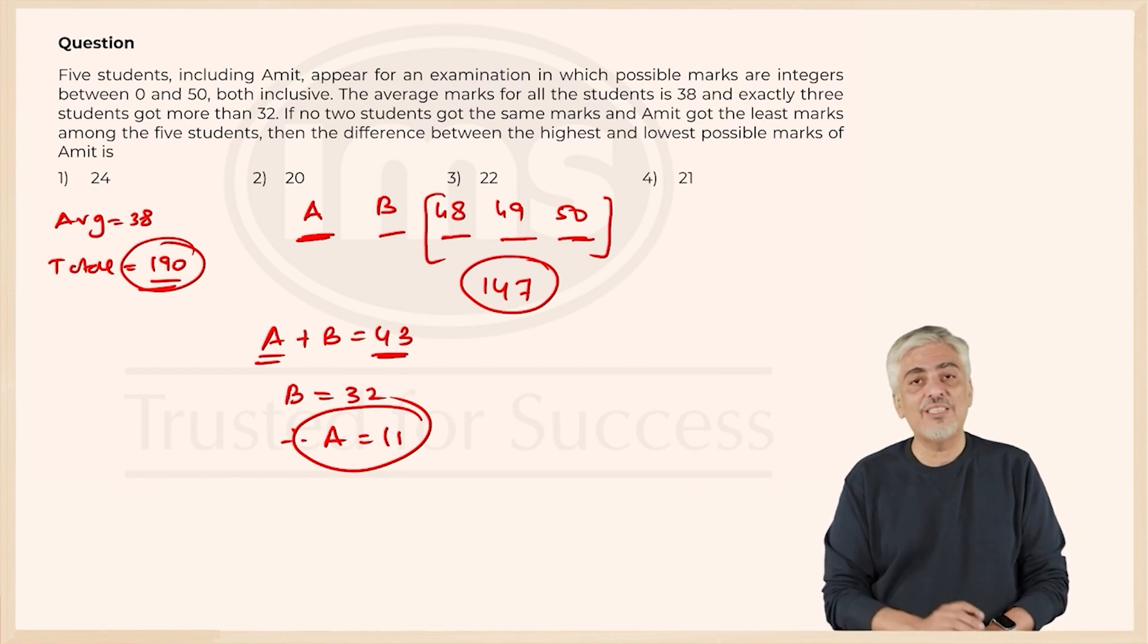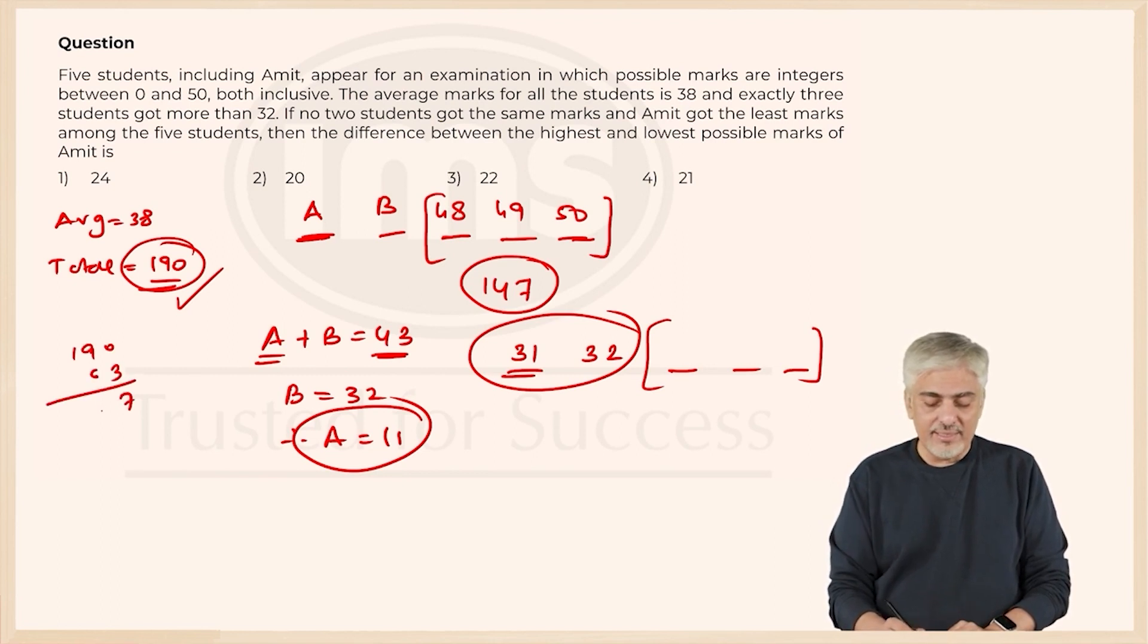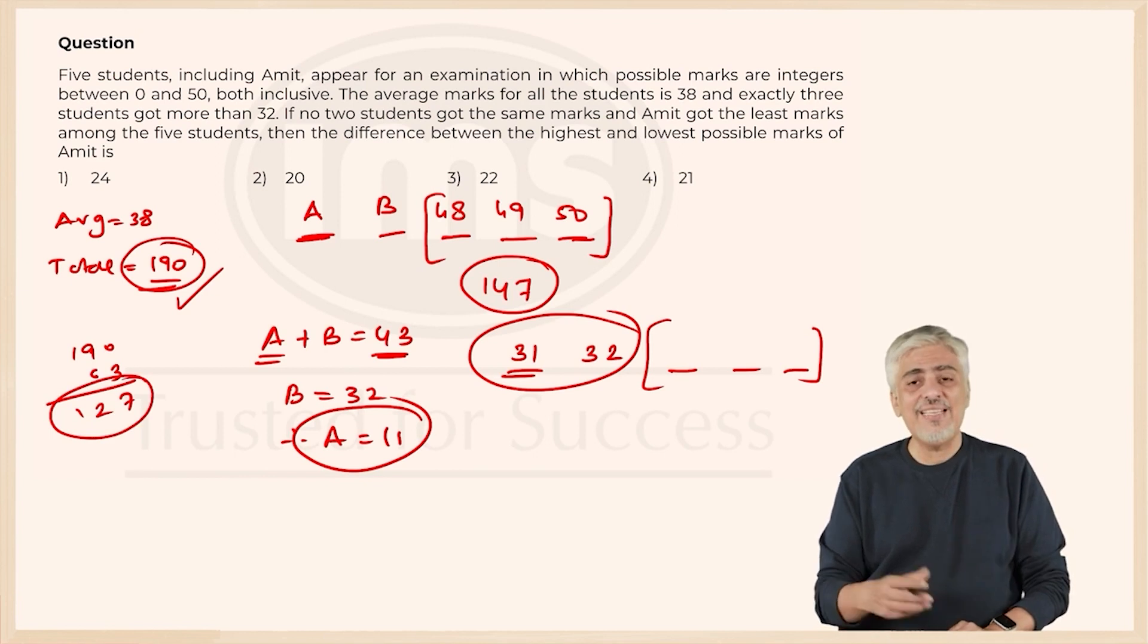Now think of the largest value A can get, and this was where you can really do it smartly. B we still know can get 32, which means the largest value A can get is 31. This lands up only to 63. The remaining 3 can easily reach 190 because 190 minus 63 is 127. I can easily score a 127 between 3 of them because I have scoped till 147 in fact. So you can just give them 40, 41, and 46.